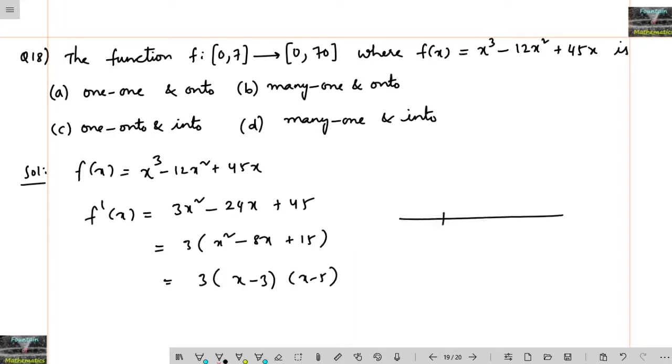This function (x - 3)(x - 5) at 3 and 5, and obviously 0 and 7 are here. At 3 and 5, positive in the sense—this is positive, then coming negative, and again positive. The sign is changing.